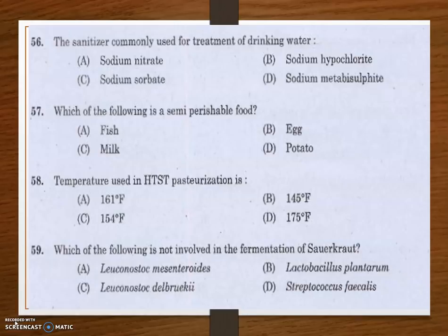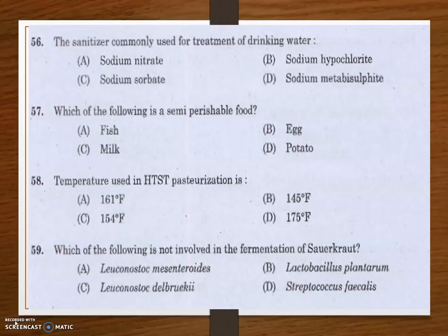Next question: which of the following is a semi-perishable food? Options are fish, egg, milk, and potato. The answer is potato. Perishable foods such as fresh vegetables and dairy products cannot be stored for a long time. Semi-perishable foods do not require refrigeration but eventually spoil. Non-perishable items include canned foods and dry items like rice and pasta. Potato is a semi-perishable food.